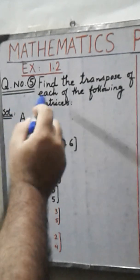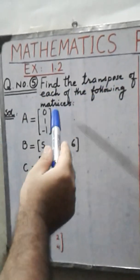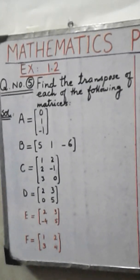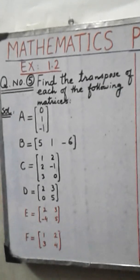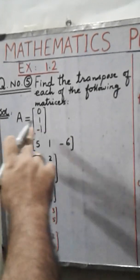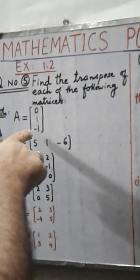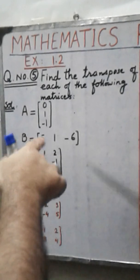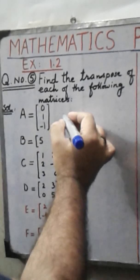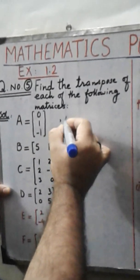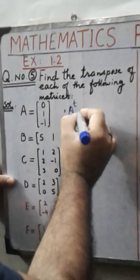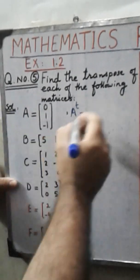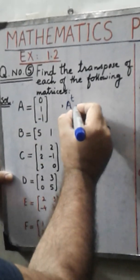First we solve question number 5: find the transpose of each of the following matrices. In this question we have to find out the transpose of each matrix. The first matrix is A, and the elements of this matrix are 0, 1, and minus 1, given in column form. When we find the transpose, we interchange the columns into rows or rows into columns.